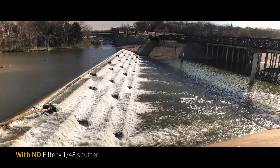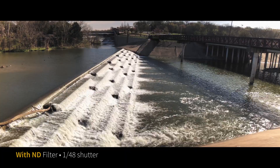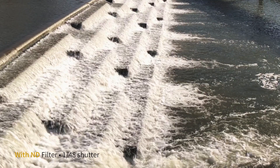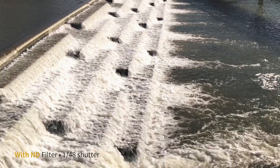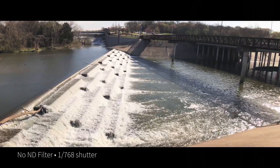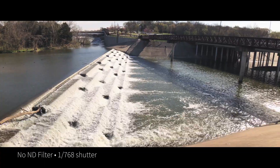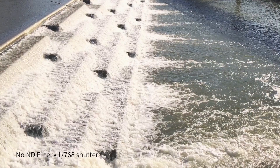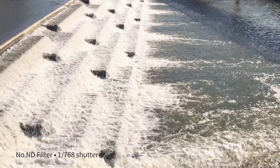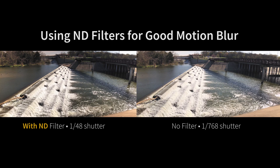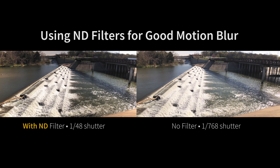Adding one of these to your rig is really nice and gives you a lot more control. Shooting more water here with the ND filter at 1/48 — you get the nice blur of the water. Again, we pushed in here, 4K in a 1080 sequence. And here is with no ND filter, 1/768 — really high shutter — you're seeing all the water droplets. Not necessarily a bad look, just not as cinematic, typically speaking. The 1/48 shutter just has that movie look, the more dreamy, cinematic look.